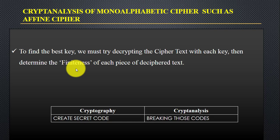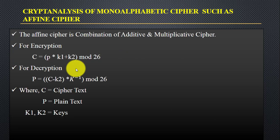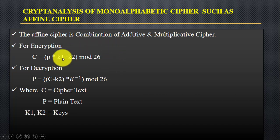The affine cipher is simply a combination of an additive cipher and a multiplicative cipher. For encryption, one algorithm is used, and for decryption, a different algorithm is used. You can see both formulas on screen.